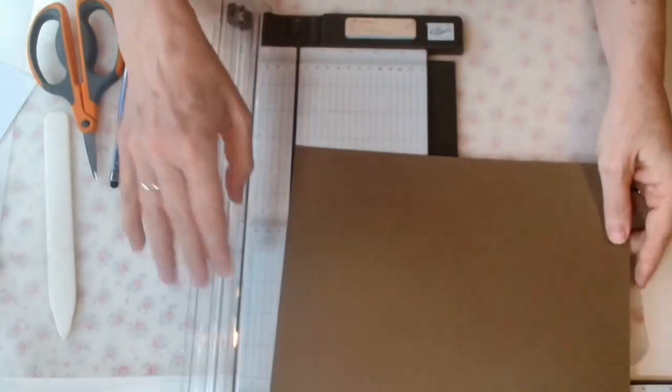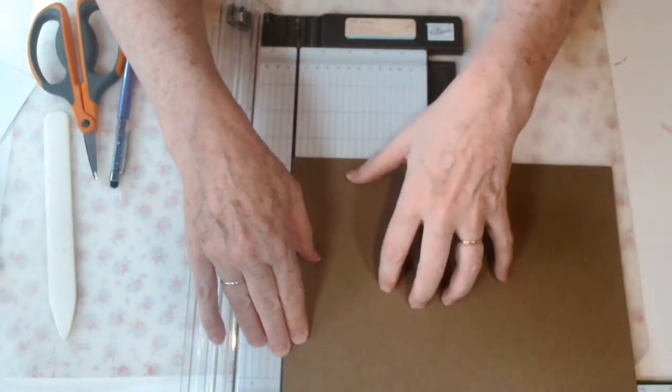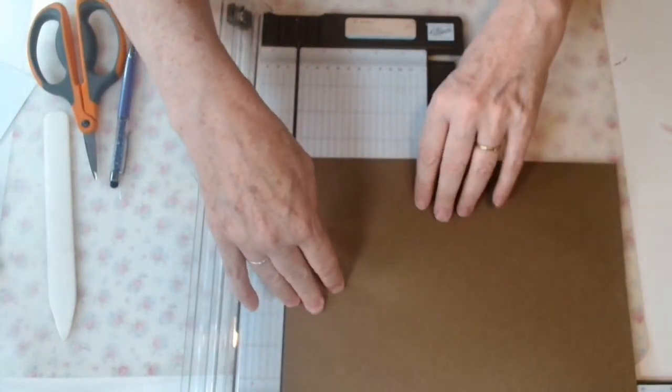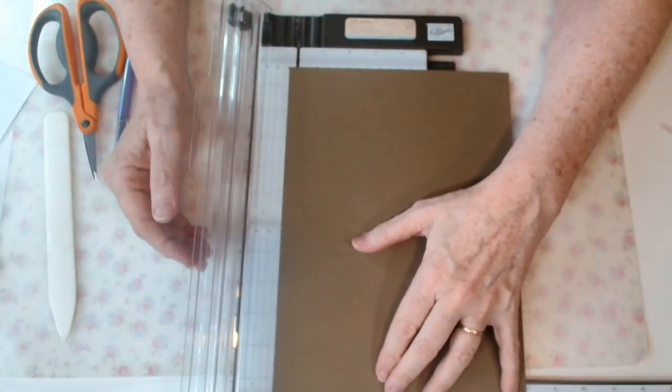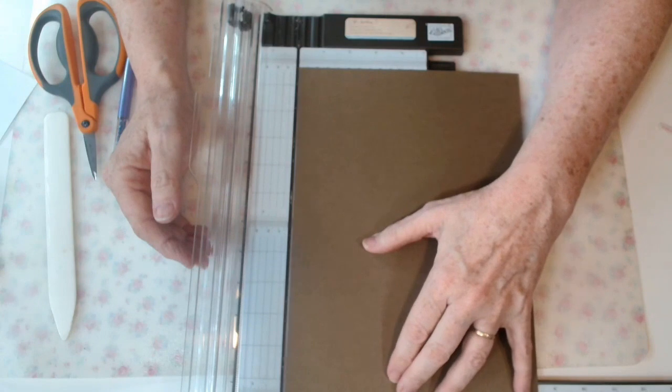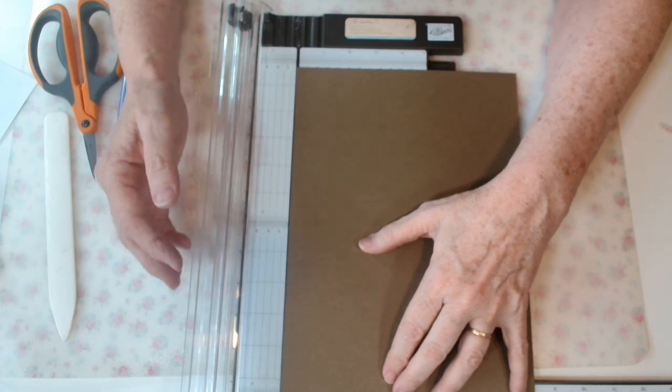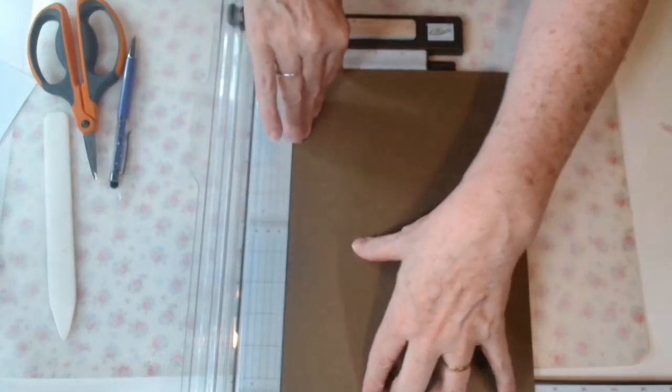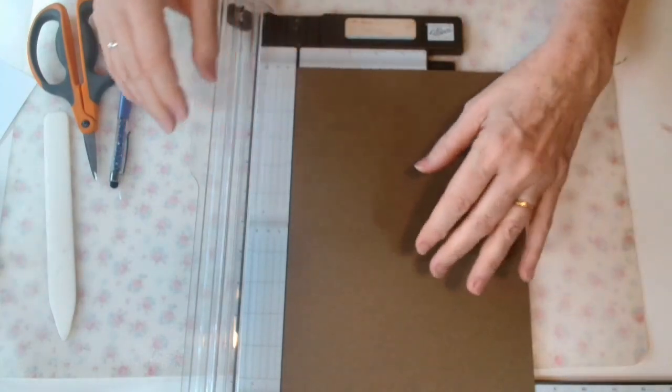It needs to be the full length, 29 and a half centimeters, and we're going to cut it at 21 centimeters. We don't need to cut it because that's how big it is. So you'll use your A4 sheet of cardstock.